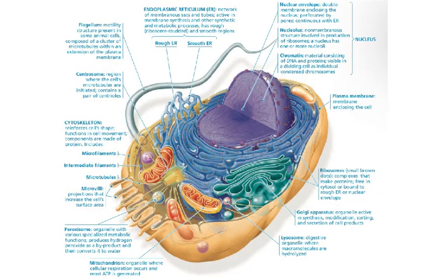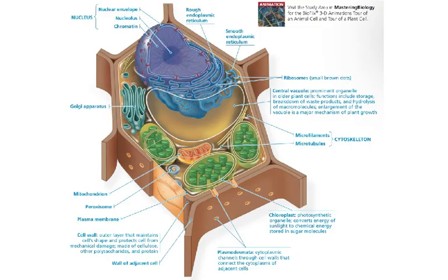Now let's look at eukaryotes. There is a lot going on in this figure — the main point is that eukaryotes are larger and more complex than prokaryotes, larger to accommodate all these complex organelles. We have an animal cell, which has all of these organelles and a plasma membrane surrounding it. The plant cell has a membrane and also a cell wall, giving it a rigid shape. Otherwise, there are a lot of similarities between the plant and the animal cell.